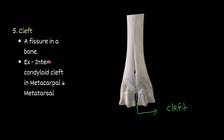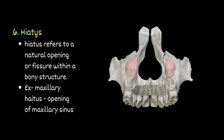Cleft — a fissure in a bone. For example, the intercondyloid cleft in metacarpal and metatarsal bones. These two are the condyles; between them we find a fissure — this is called the cleft. Then hiatus — a natural opening or fissure within a bony structure. For example, the maxillary hiatus — the opening of the maxillary sinus. The inner structure is the maxillary sinus and its outer opening is the maxillary hiatus.